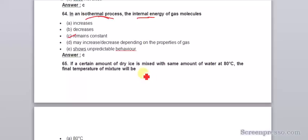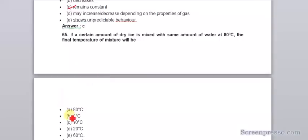If a certain amount of dry ice is mixed with the same amount of water at 80 degrees Celsius, the final temperature of the mixture will be 0 degrees Celsius.